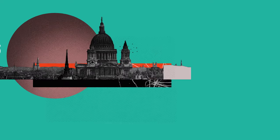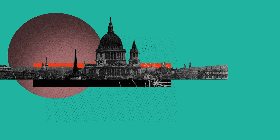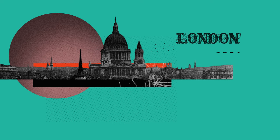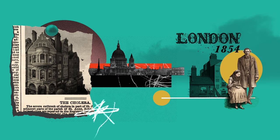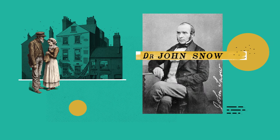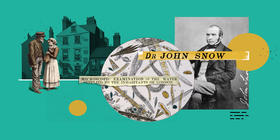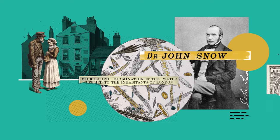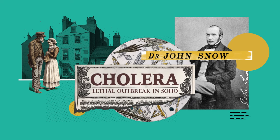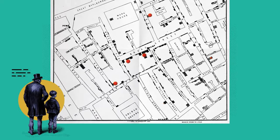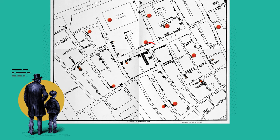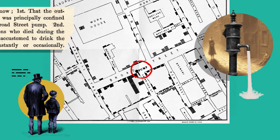One of the best-known uses of data visualisation was devised in London in 1854. At the time, it was widely believed that infectious diseases like cholera were spread through the air. Surgeon John Snow felt differently — he was convinced that infections could be spread by dirty water. When a deadly outbreak of cholera occurred in Soho, Snow tracked each case and marked them with a dot on a map. A clear picture emerged.